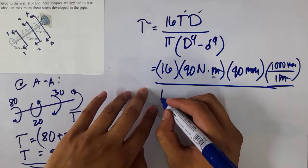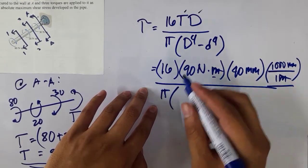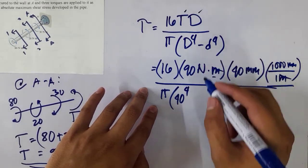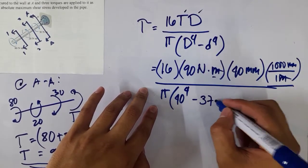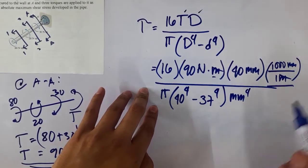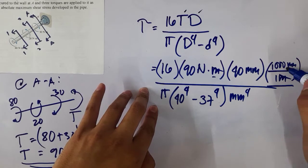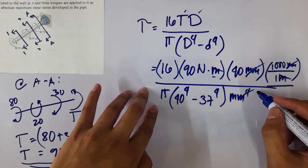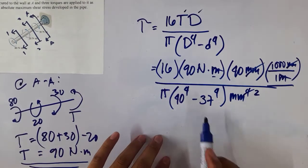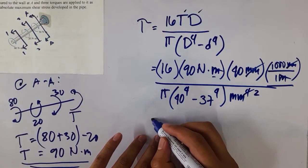This one cancels with this one. Then you have π, D⁴ is 40, and then you have the small d, which is 37. The unit is mm⁴. This one cancels, and what's left in the denominator is mm². So we have newton per mm², or megapascals.